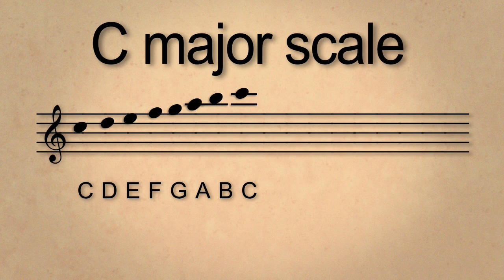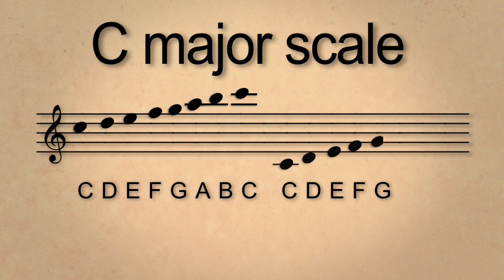We can also do this scale on the treble clef an octave lower, starting with the ledger line below the staff. Again: C, D, E, F, G, A, B, C.